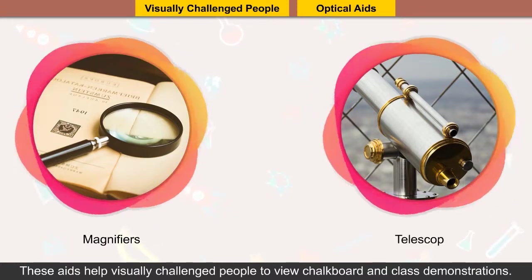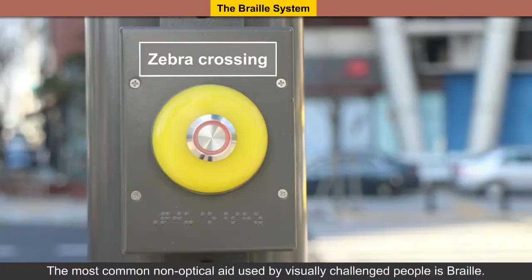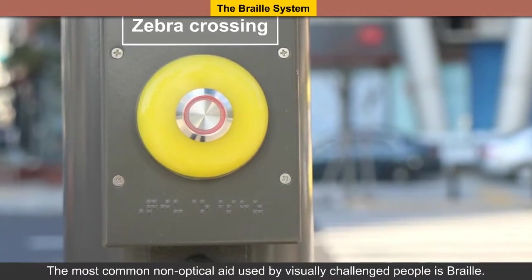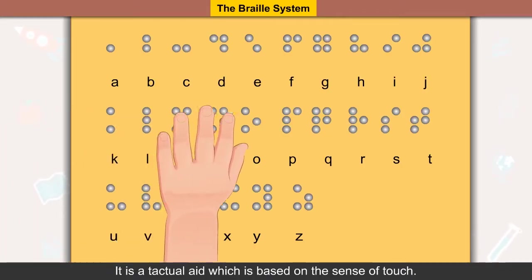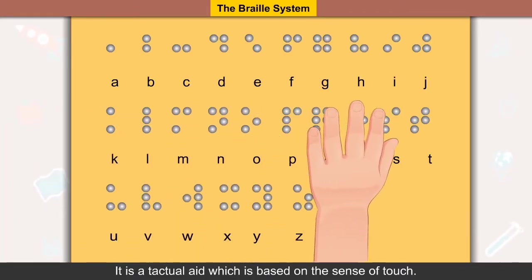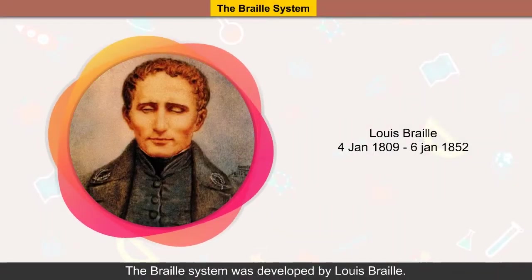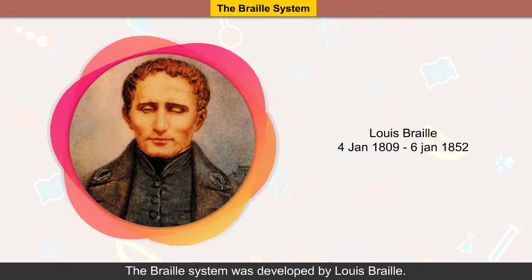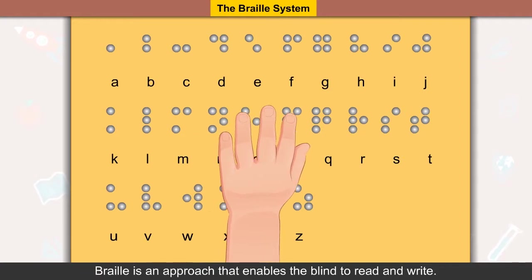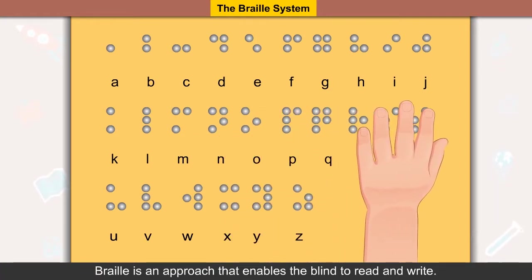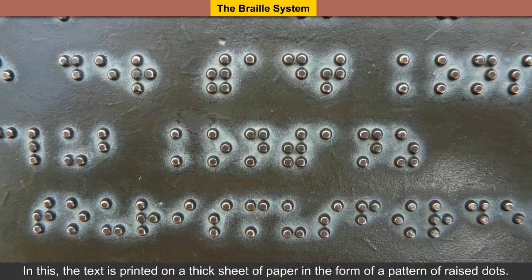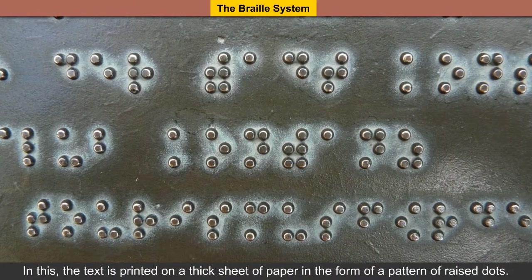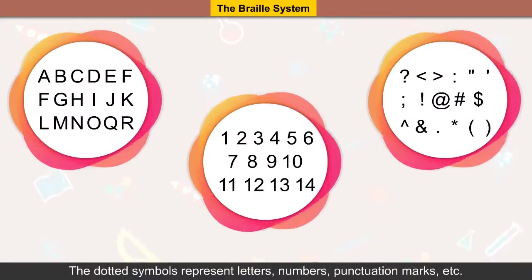Braille system: the most common non-optical aid used by visually challenged people is braille, a tactile aid based on the sense of touch. The braille system was developed by Louis Braille. Braille is an approach that enables the blind to read and write, where the text is printed on a thick sheet of paper in the form of a pattern of raised dots.